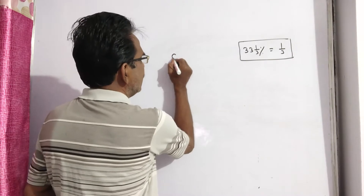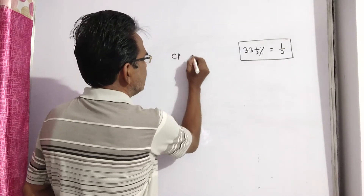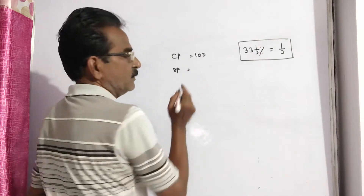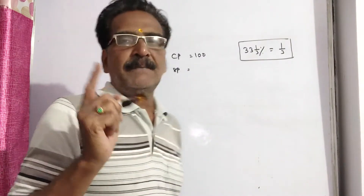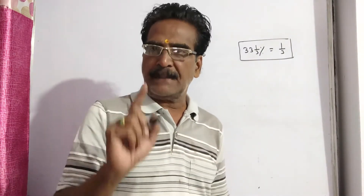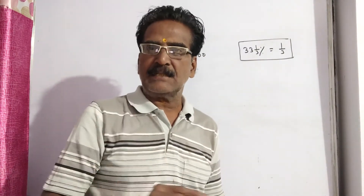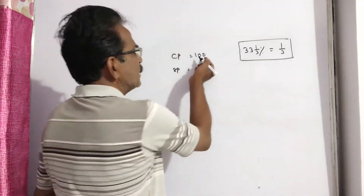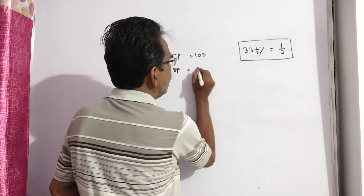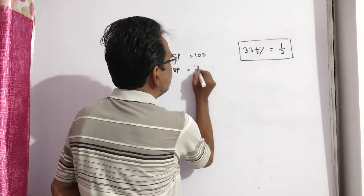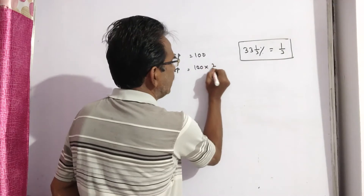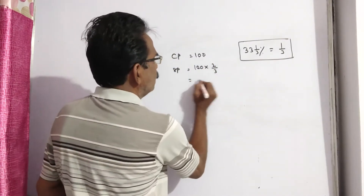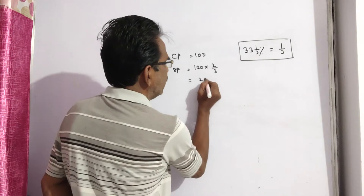Say cost price is equal to 100. Then, a 33⅓ percent loss means 1/3 loss, so it is sold at 2/3. So, 100 × 2/3, it is sold at 200/3.